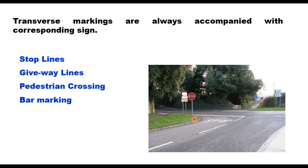There are four types of transverse markings: stop line, give way line, pedestrian crossing, and bar marking.